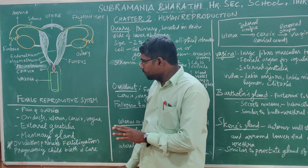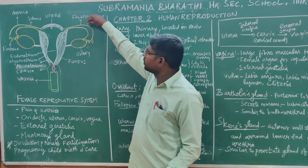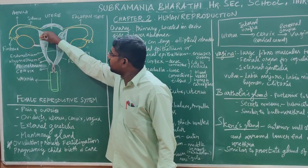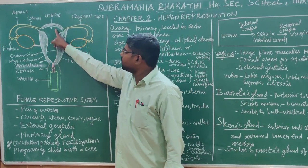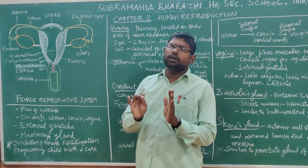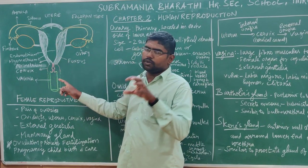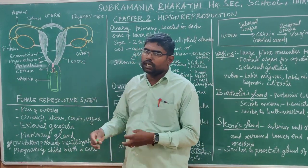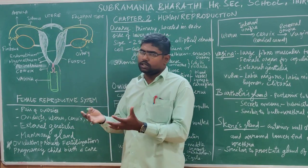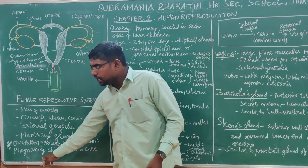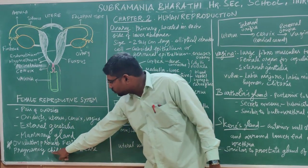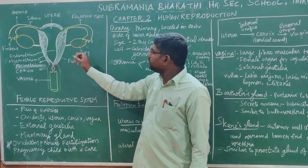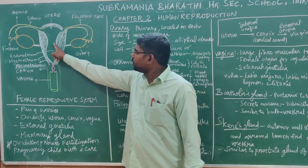The female reproductive system functions include ovulation and fertilization, leading to pregnancy. Fertilization produces a zygote, which implants in the endometrial wall of the uterus. The fetus develops in the mother's body. The third function is childbirth, which occurs around 40 weeks of pregnancy.